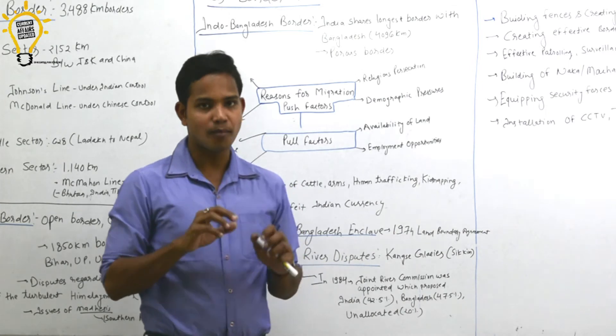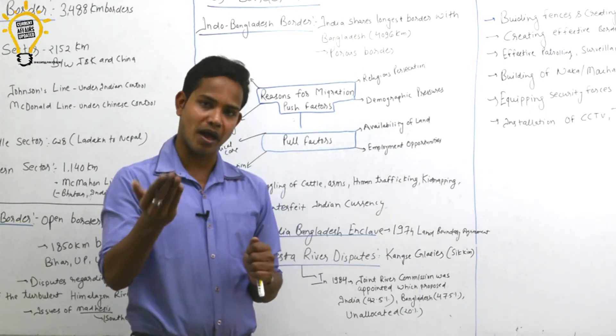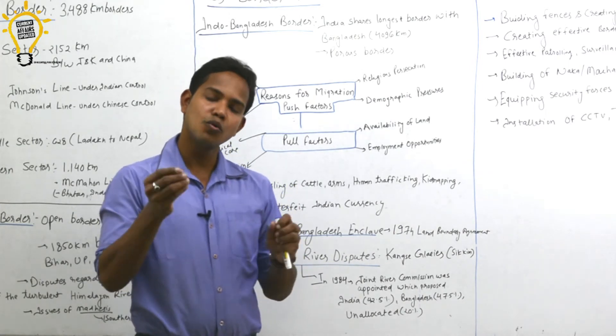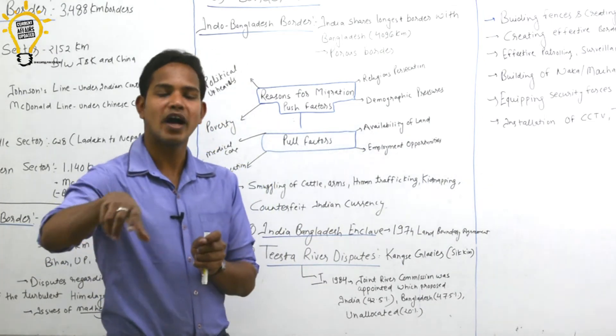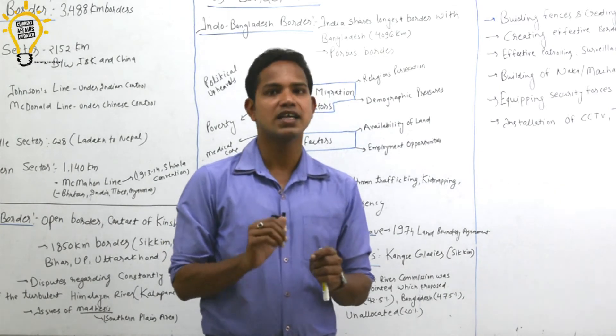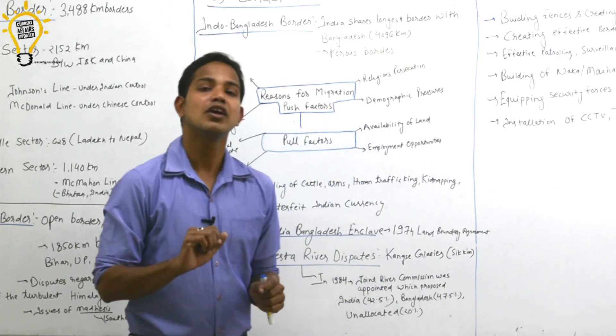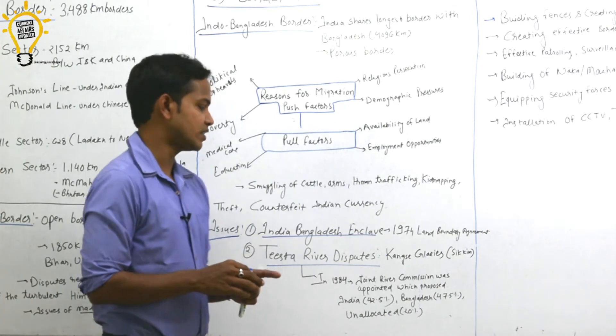One issue has been resolved now - the India-Bangladesh enclave issue. We gave a little more land to Bangladesh on that side, and we took around 51 enclaves from them. Those people living there who wanted to come to India could come to India, or go to Bangladesh if they wanted. That was a big issue which we resolved.